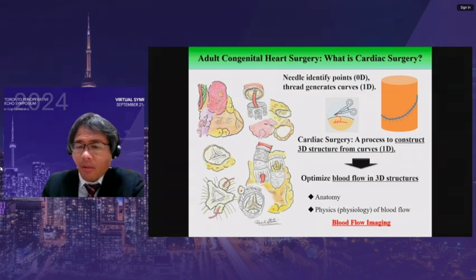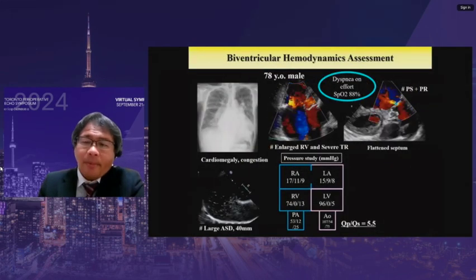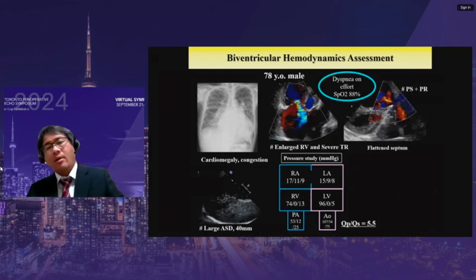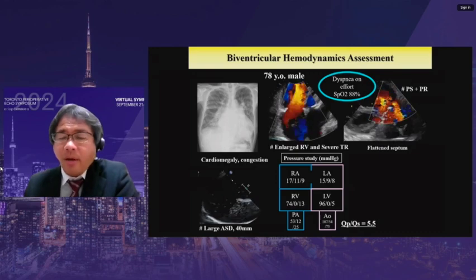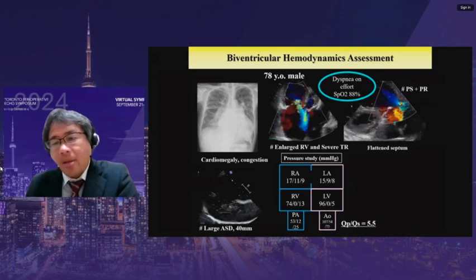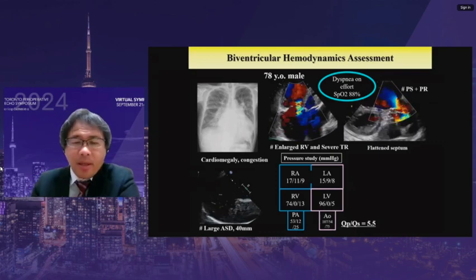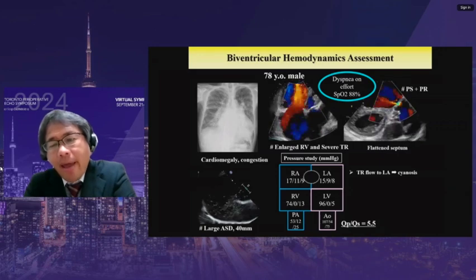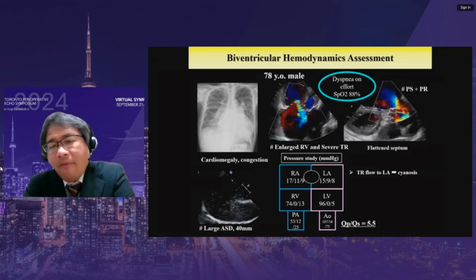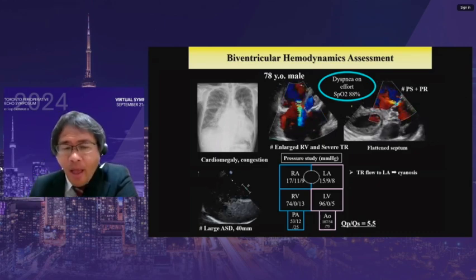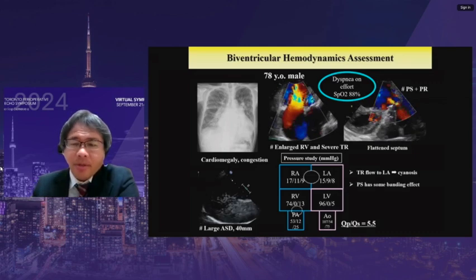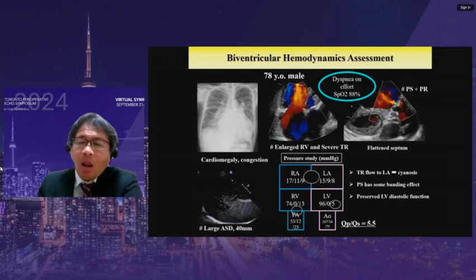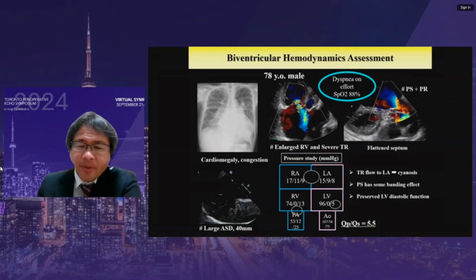Anatomy and physics of blood flow — physiology — are quite important. That is why I developed blood flow imaging. Here we show an example: a large ASD case, unrepaired in an elderly patient who suffered from dyspnea, cyanosis with cardiomegaly, and congestion. Echocardiography demonstrated a large ASD and severe tricuspid regurgitation. Part of the flow penetrated into the LA, causing cyanosis. The pulmonary valve had stenosis with regurgitation. A Fontan study indicated pulmonary stenosis has some bonding effect on the pulmonary vascular bed. Low level of end-diastolic pressure was observed. QP/QS was 5.5.